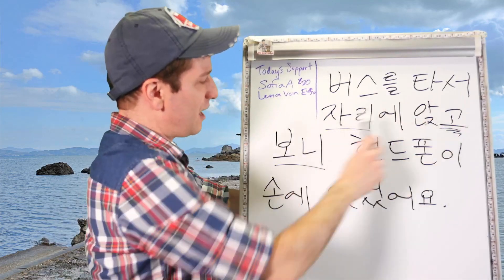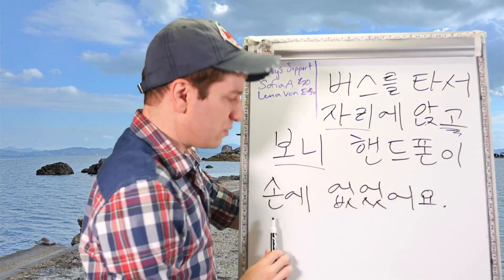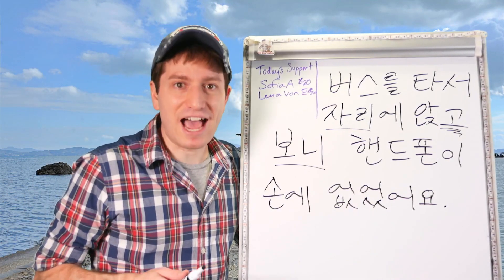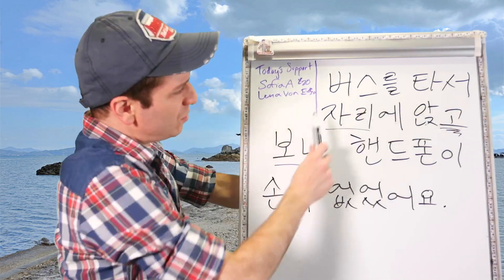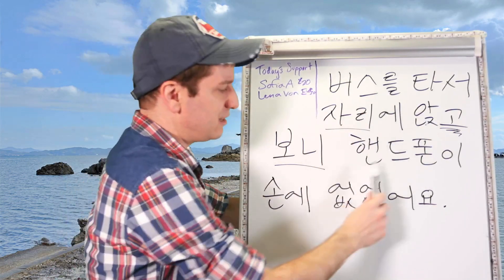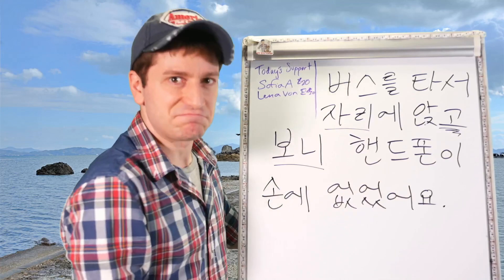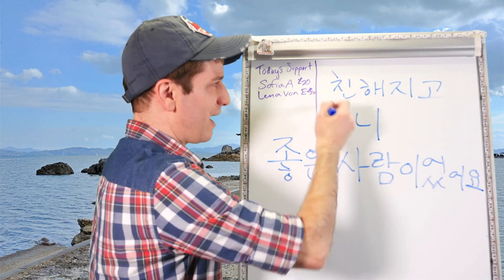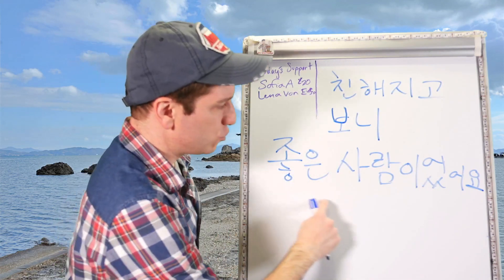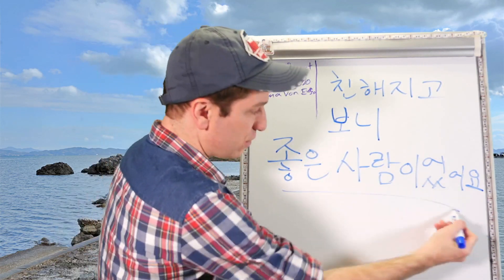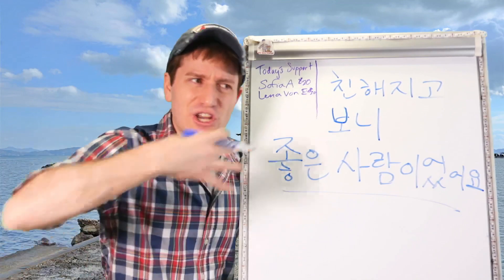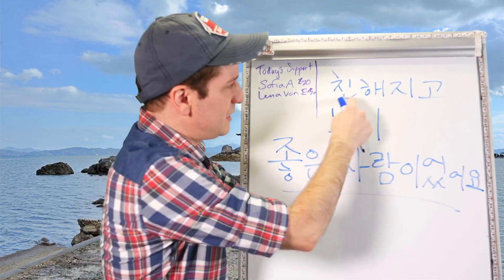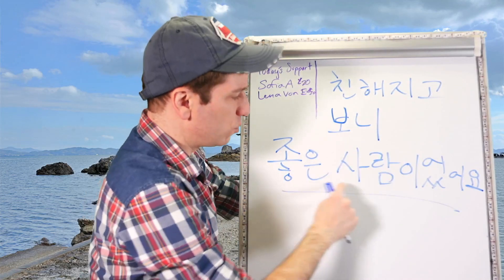버스를 타서 자리에 앉고 보니 핸드폰이 손에 없었어요 — after I sat down in my seat on the bus, I realized I didn't have my phone. Next: 친해지고 보니 좋은 사람이었어요. So I became close with them, and after I became close with them, I realized they were a good person — 좋은 사람이었어요. After getting to know them, I realized they were a good person.